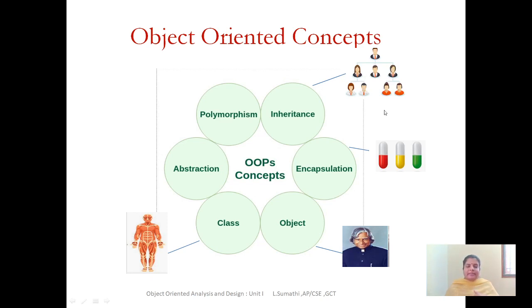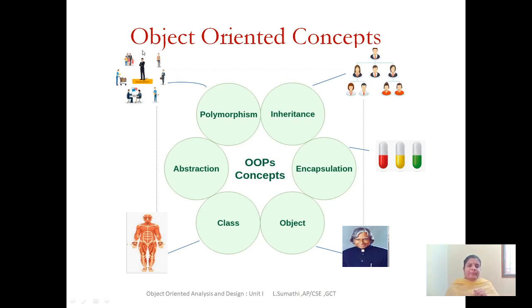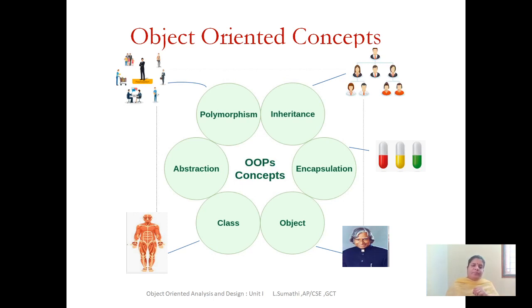So, then what is polymorphism? Polymorphism is nothing but taking more than one form. In day-to-day life, a person plays many roles — he plays as a student, as a child, as a friend. A same person plays multiple roles in a day and throughout their life cycle. That is polymorphism. In your OO concept, an object will take a different form, and a method can take different forms. That is polymorphism.